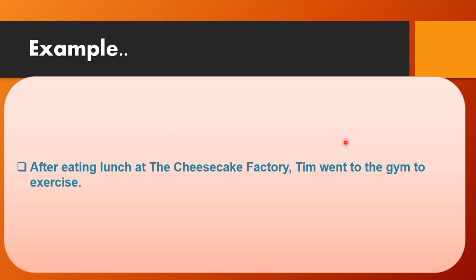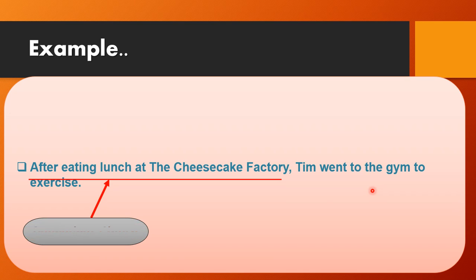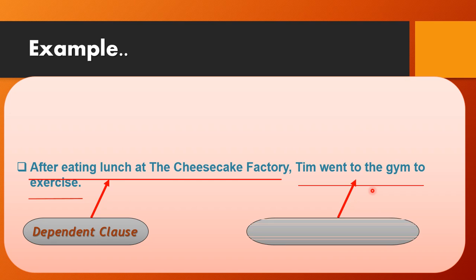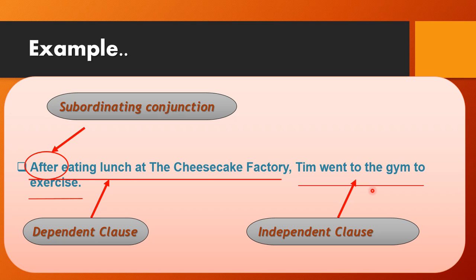Another example: 'After eating lunch at the Cheesecake Factory, they went to the gym to exercise.' 'After eating lunch at the Cheesecake Factory' is the dependent part — that's why we separate it with a comma from the independent clause 'they went to the gym to exercise.' Here 'after' is the subordinating conjunction.